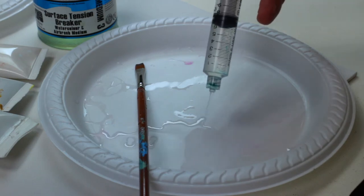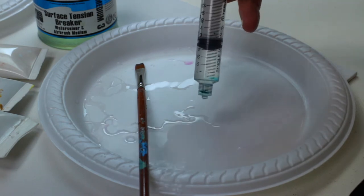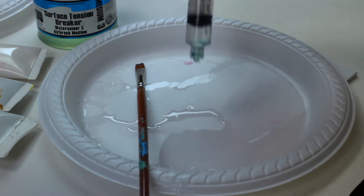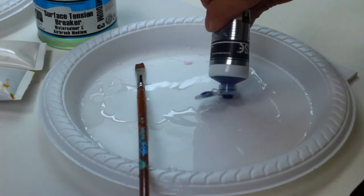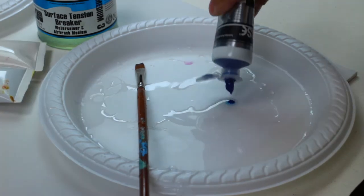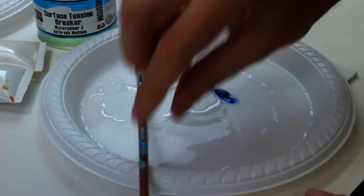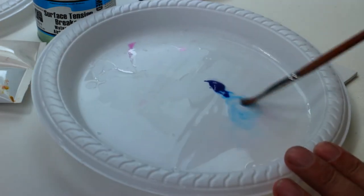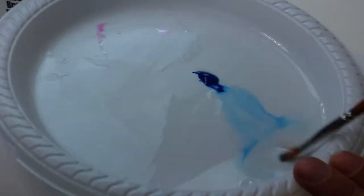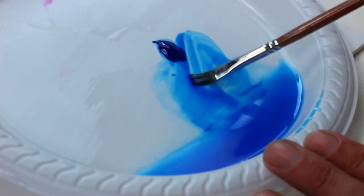What I'm going to do is add that to a palette and I'm going to do this three times and have three separate palettes of three different colors. Today I'm using thallow blue, yellow mid, and magenta.